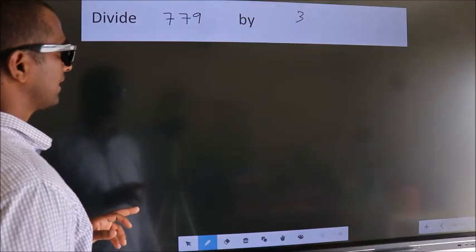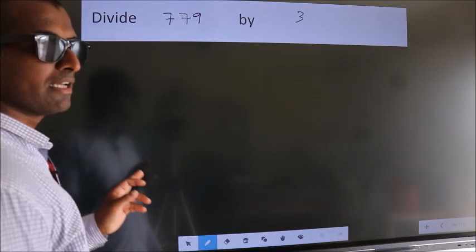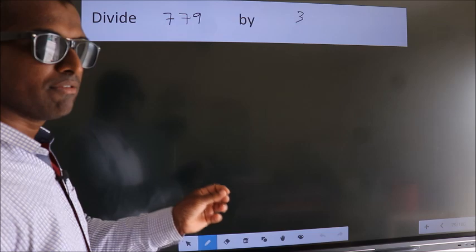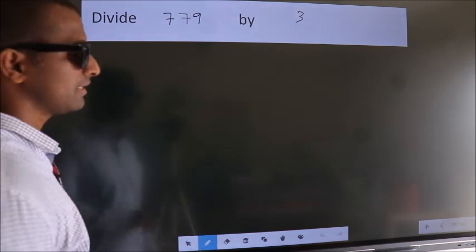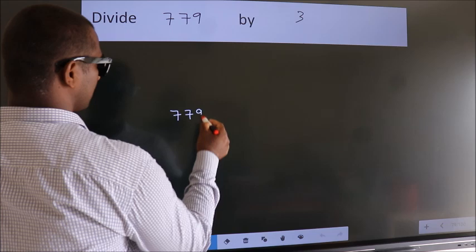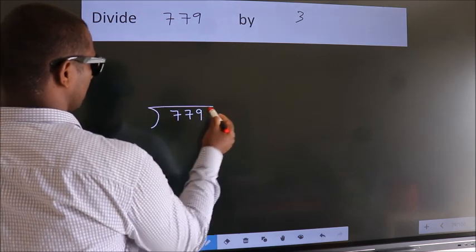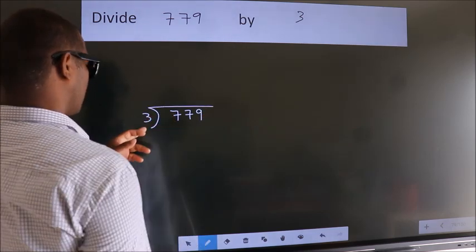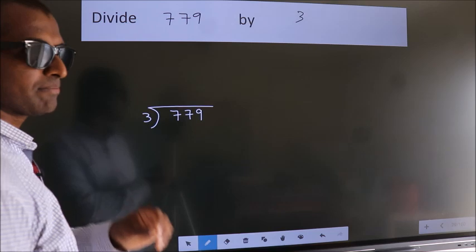Divide 779 by 3. To do this division we should frame it in this way. 779 here, 3 here. This is your step 1.